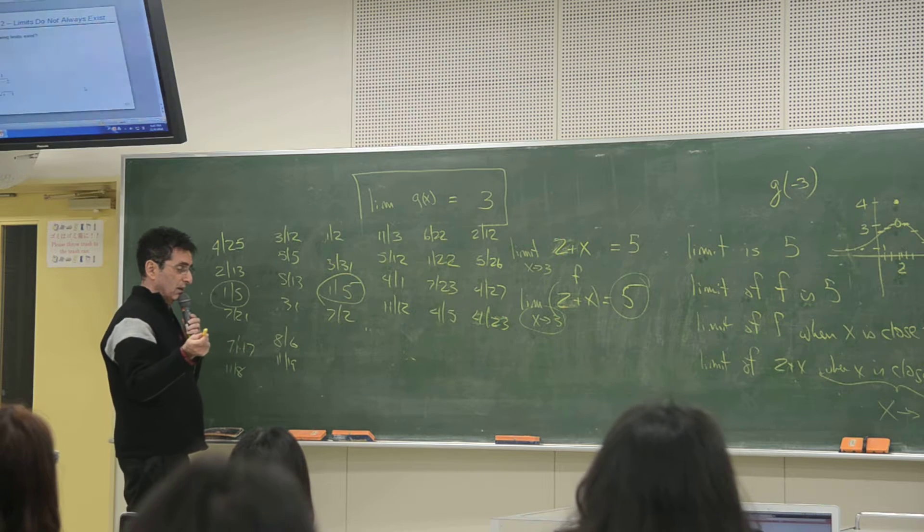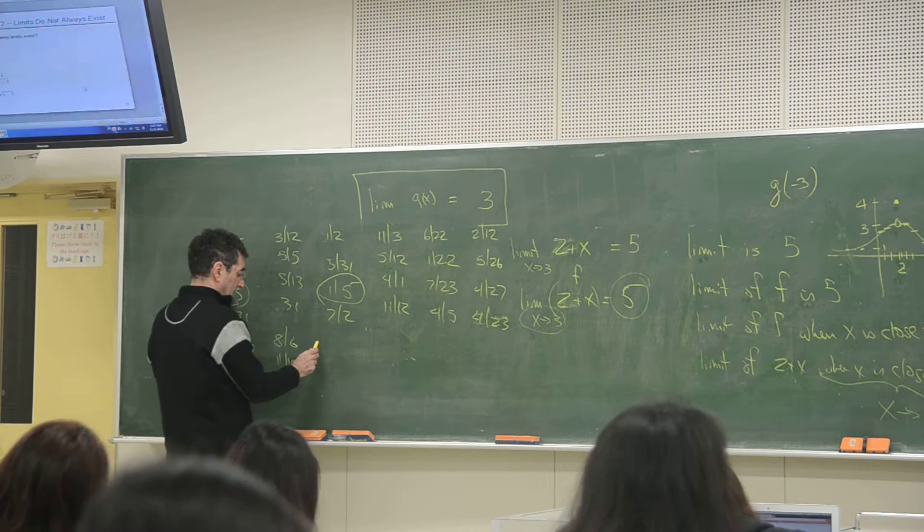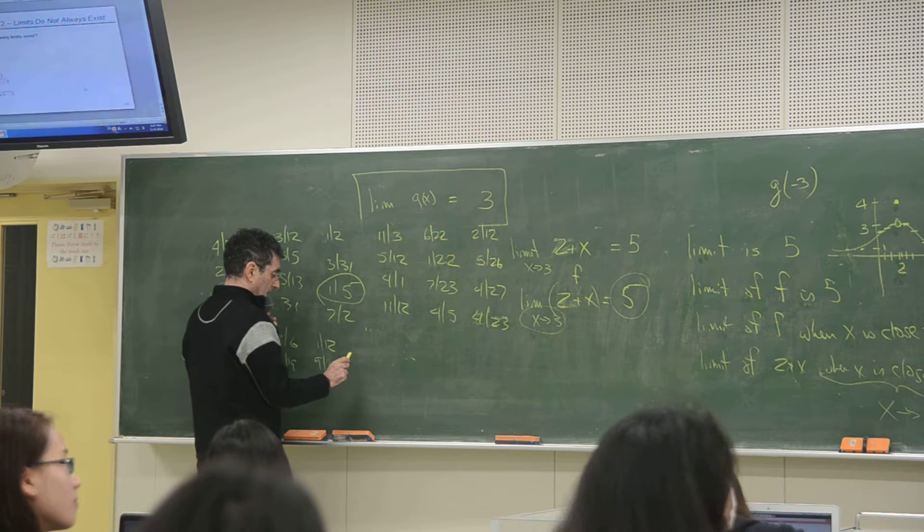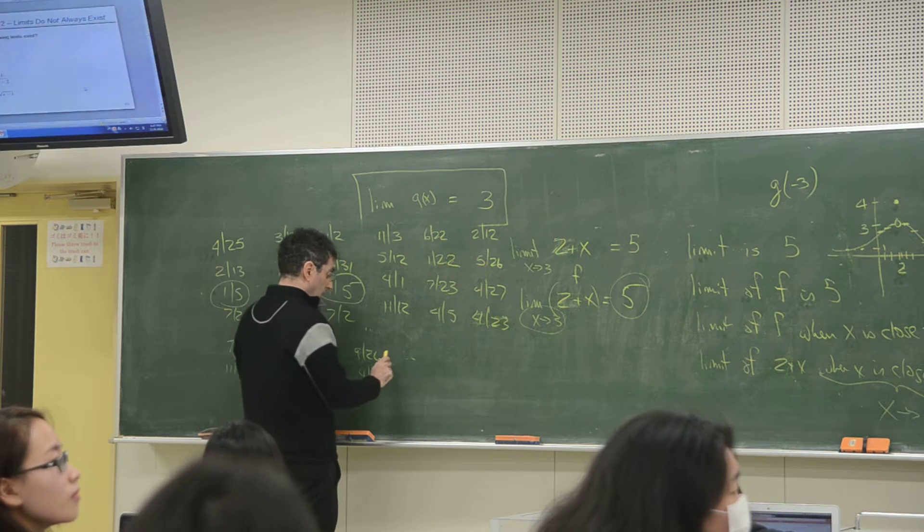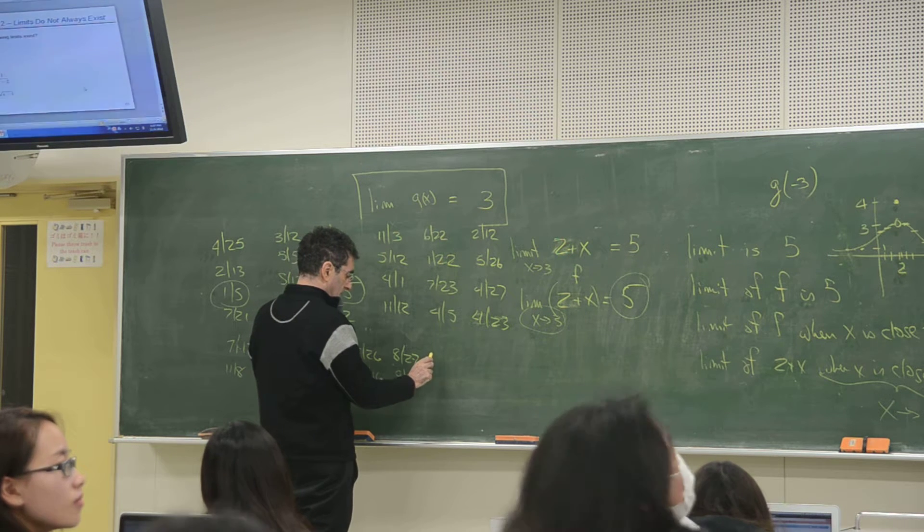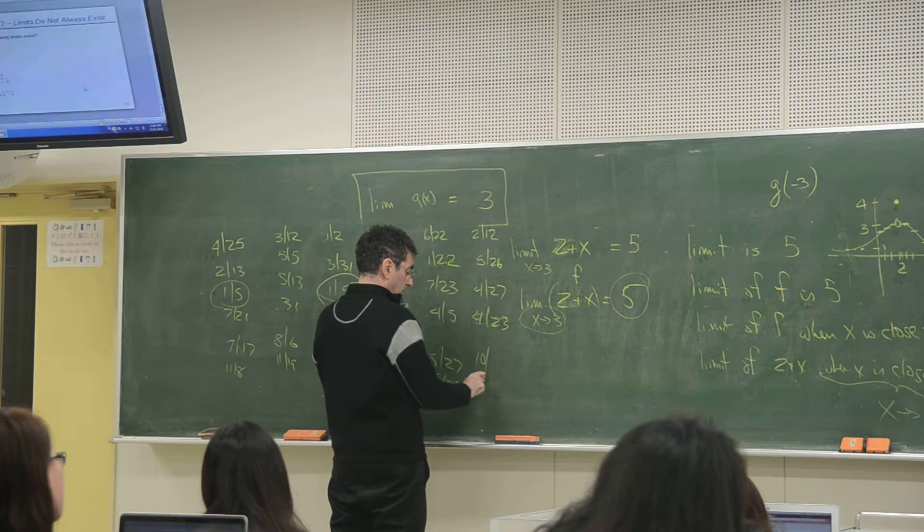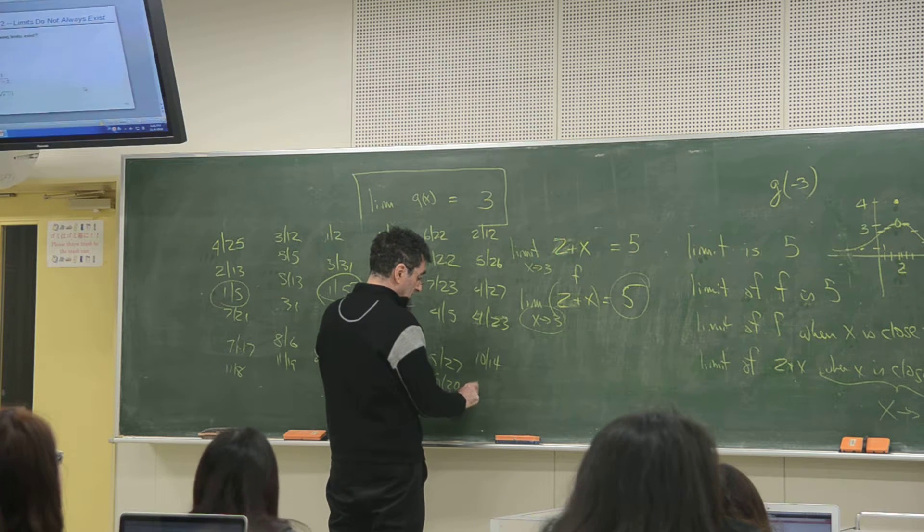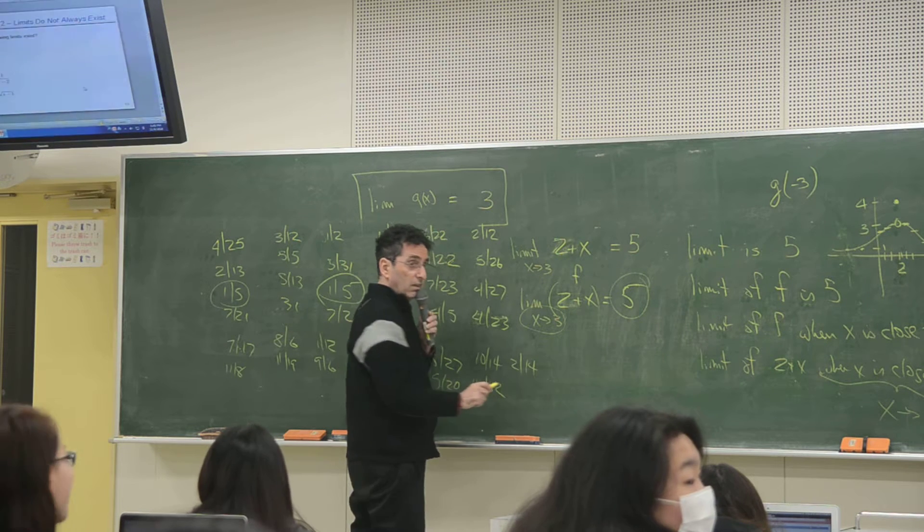Who's next? One twelve. Next person? Nine six. Next person? Nine twenty six. Next? Four sixteen. Eight twenty seven. Next? Nine eighteen. Next. Five twenty. Next? Ten fourteen. Next. Eleven twelve. Eleven twelve. Next. Three fourteen. Next. Is that all? Yeah.